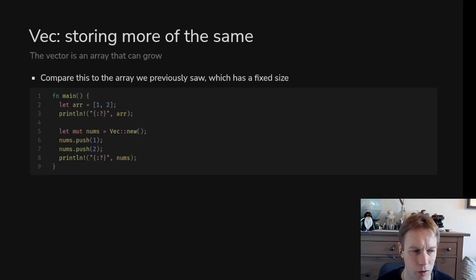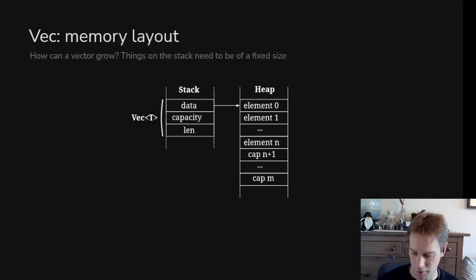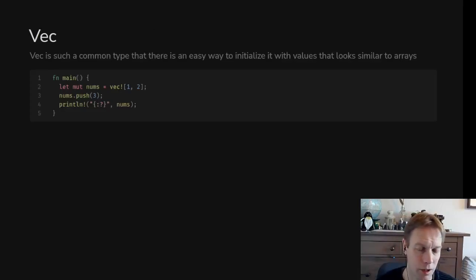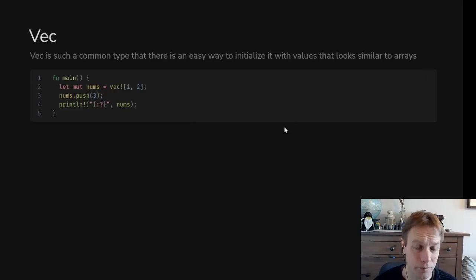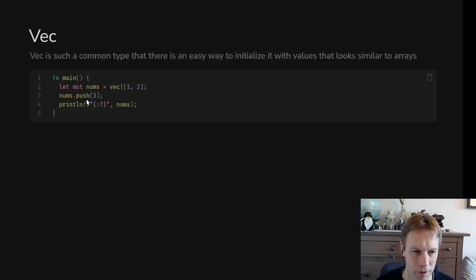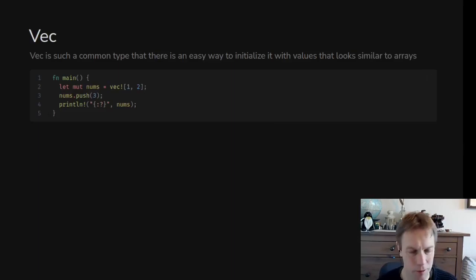There's a lot more to it in Rust. Vec guarantees that all elements are held next to each other in memory. There's a convenient way of initializing it using the `vec!` macro with a small 'v' — you can put square brackets in, and it almost looks like an array. In Rust, macros can use square brackets instead of round or curly brackets, but conventionally when making a vector you write it this way. It has to be mutable to be resizable. You can add another element to the end — so it's a resizable array-like thing, incredibly useful.